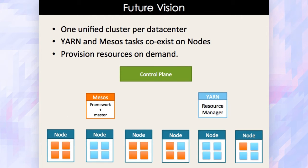Our future vision is to get rid of the notion of saying that I want to run my job on a Mesos cluster or on a Yarn cluster when the data center has multiple resource managers. Instead, we want one unified cluster where you can have multiple resource managers running, and you can still run any task from any resource manager on any node. The orange tasks are launched by Mesos, whereas the blue ones are from Yarn's resource manager, and we have a mixed distribution of workloads running on the nodes.